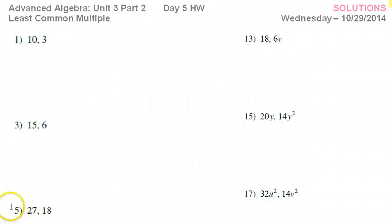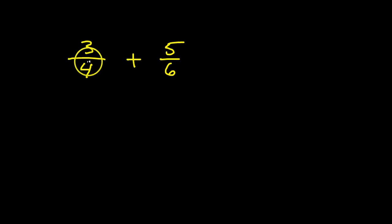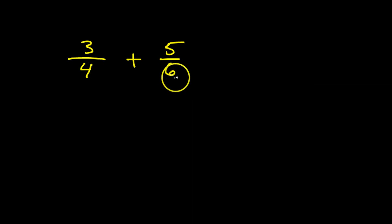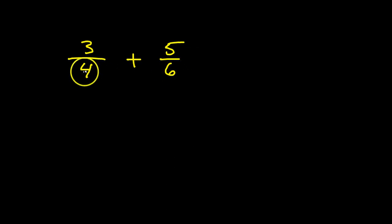In this lesson we will practice finding the least common multiple of two expressions. The concept of least common multiple comes up a lot when you think about adding fractions because you want the denominators to be the same in order to add the fractions, but you want the new denominator to be as small as possible, so we want the least common multiple.